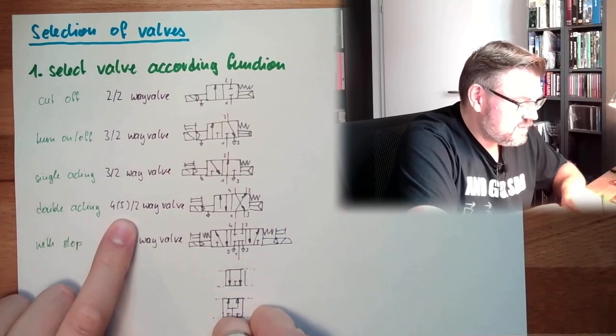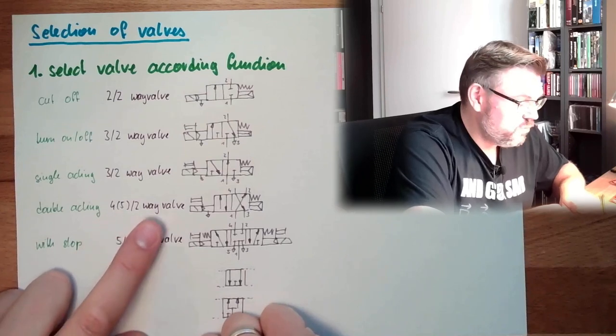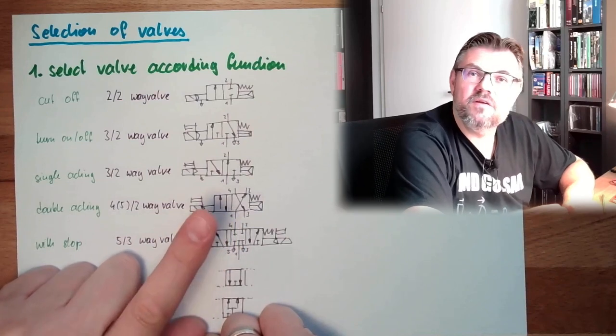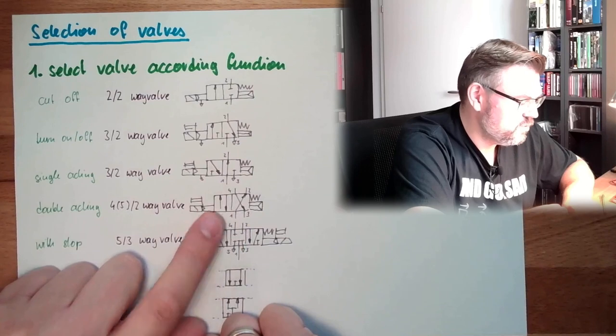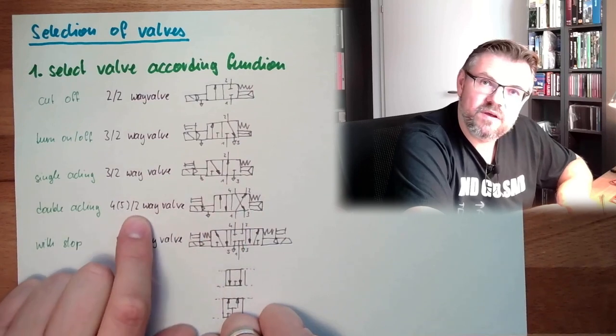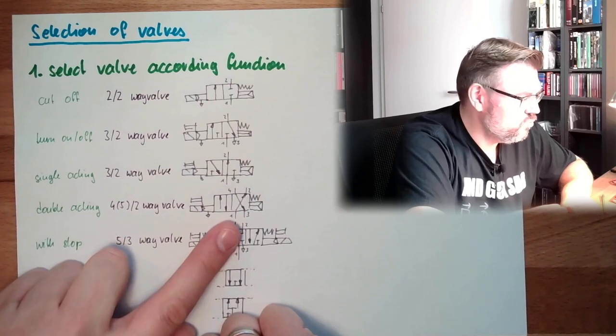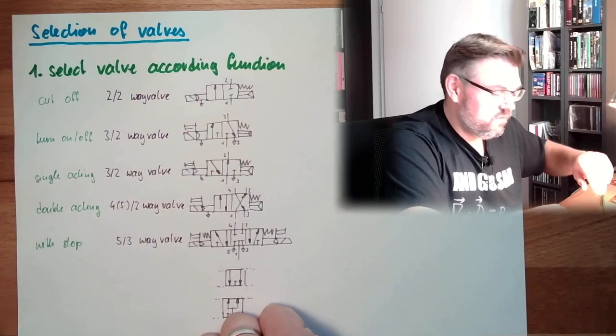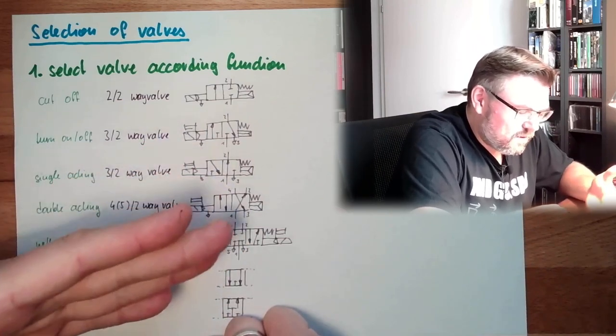Then double-acting cylinders, we said we are using 4 or 5/2 way valves. Here I have drawn a 4/2 way valve, this is very usual in hydraulics we have said. In pneumatics we usually have 5/2 way valves, because simply cheaper to produce and I can get rid of the air at the valve. We talked about this.